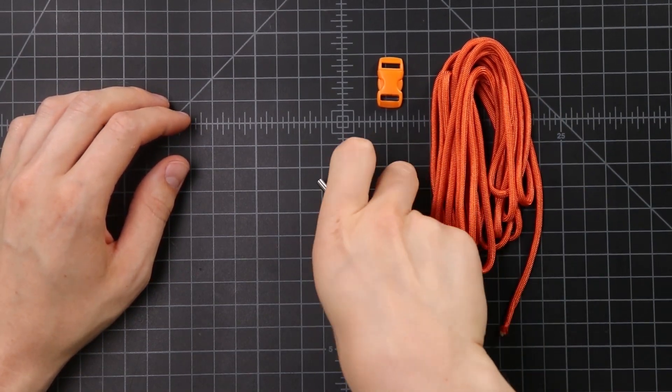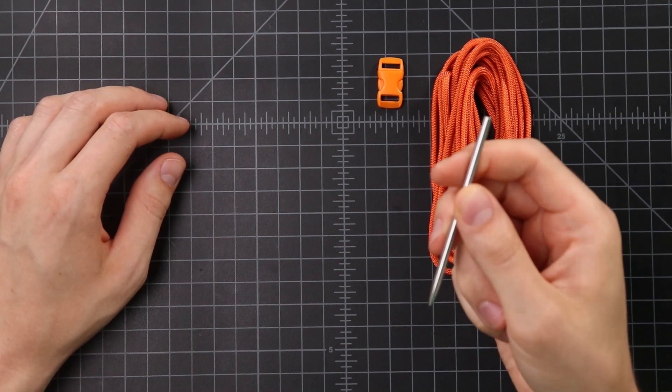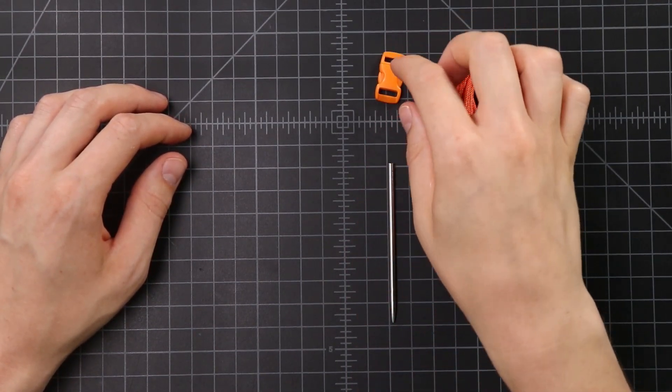So for this bracelet, all you're going to need is about 8 feet of paracord, a Type 2 or Type 3 FID. I like using a Type 2, and you'll see why in a minute, and then just a 3/8 inch buckle.